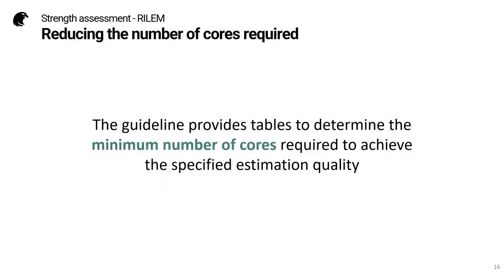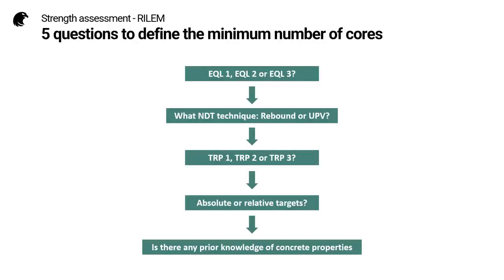Another aim of the guideline was to reduce the number of cores required, so the guideline provides tables to determine the minimum number of cores required to achieve the specified estimation quality. In order to do this, we have to answer five questions: What is the estimation quality level? What NDT technique are we using — rebound or UPV? What test result precision do we have? Do we want absolute or relative targets — a percentage or a target in megapascals? And finally, is there any prior knowledge of the concrete properties?